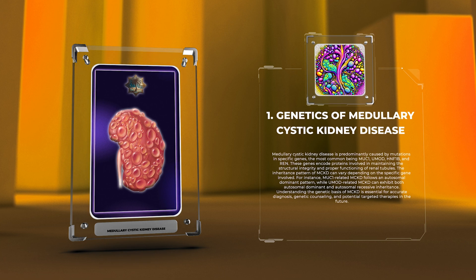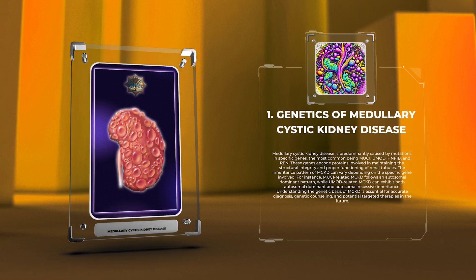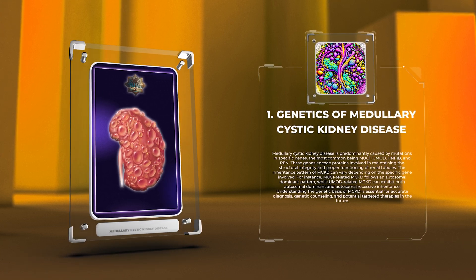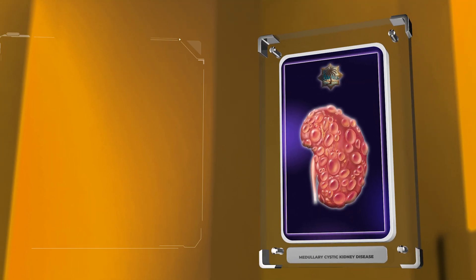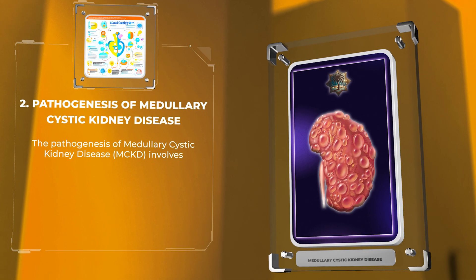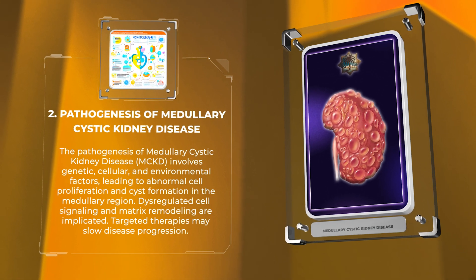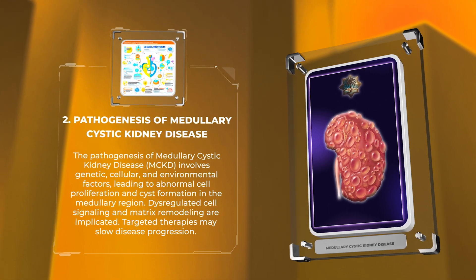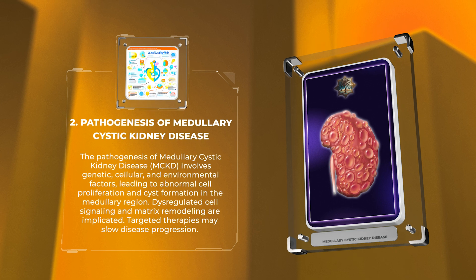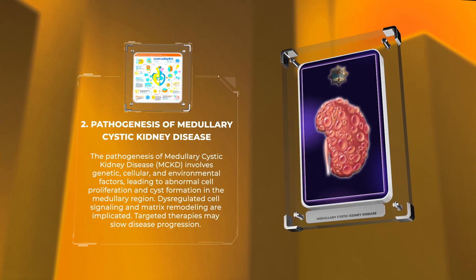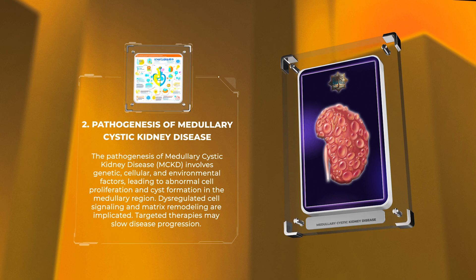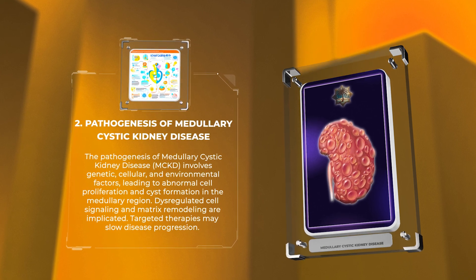Understanding the genetic basis of MCKD is essential for accurate diagnosis, genetic counseling, and potential targeted therapies in the future. The pathogenesis of MCKD involves genetic, cellular, and environmental factors, leading to abnormal cell proliferation and cyst formation in the medullary region. Dysregulated cell signaling and matrix remodeling are implicated, and targeted therapies may slow disease progression.